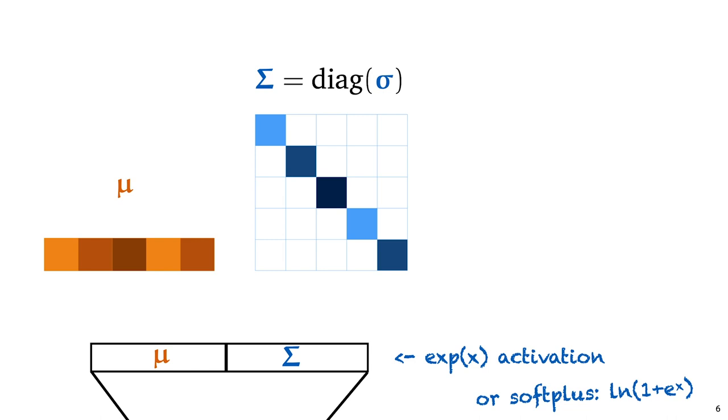The only thing we need to be careful about is choosing our activations. For the mean, we should use a linear activation since it can have any value, including negative values. The values of the covariance matrix need to be positive. To achieve this, we often exponentiate them. We'll call this an exponential activation. An alternative option is the soft plus function. This has the benefit of growing a little less explosively than the exponential activation.